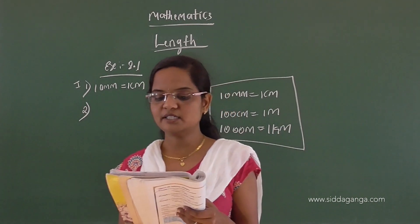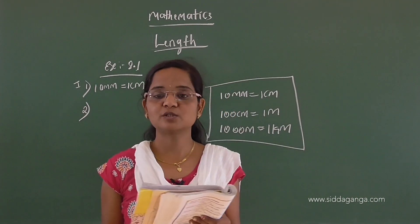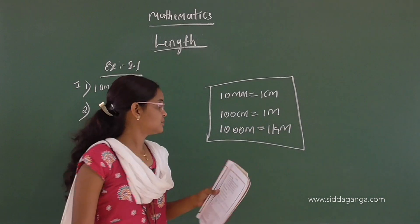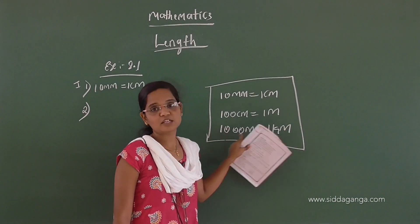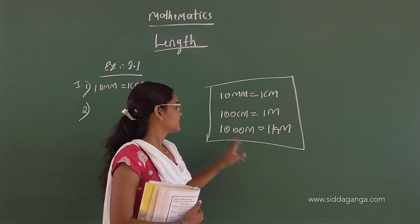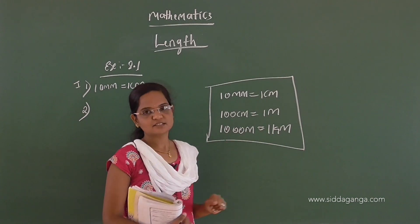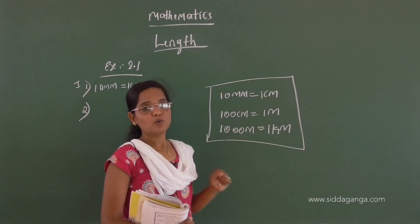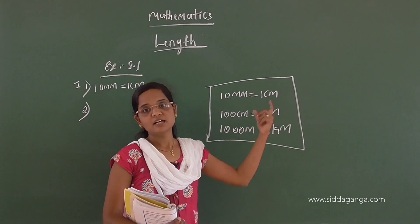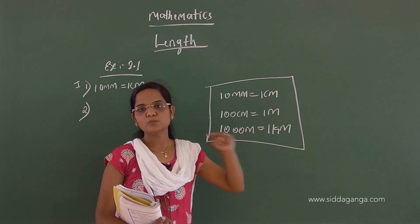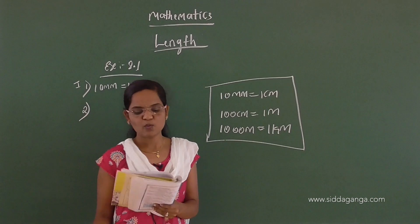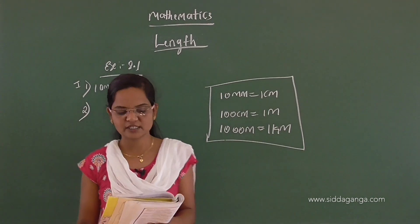How many meters make 1 kilometer? The kilometer-to-meter relationship is: 1000 meters equals 1 kilometer. So 1000 meters make 1 kilometer is the answer.